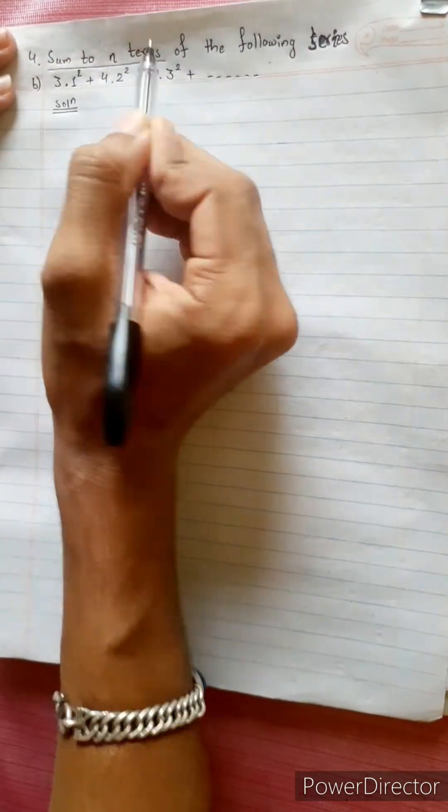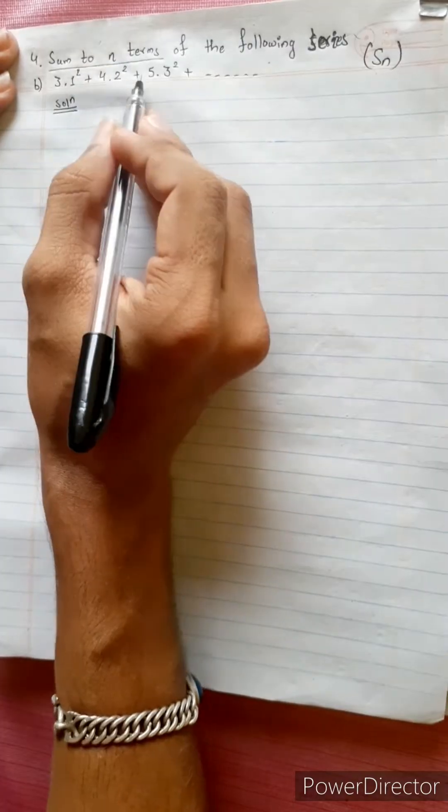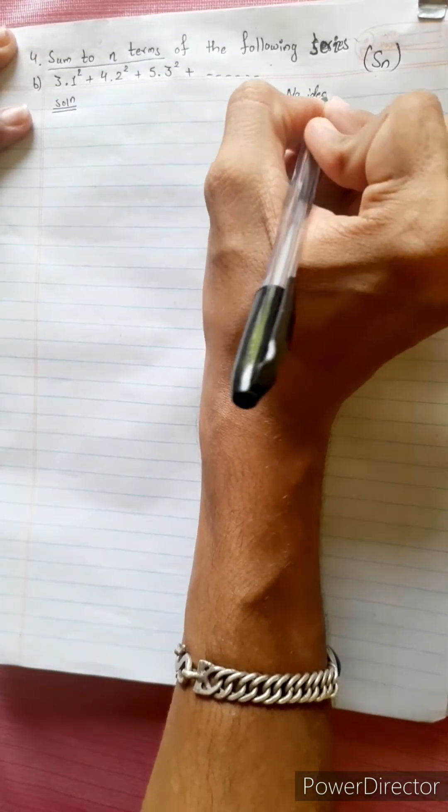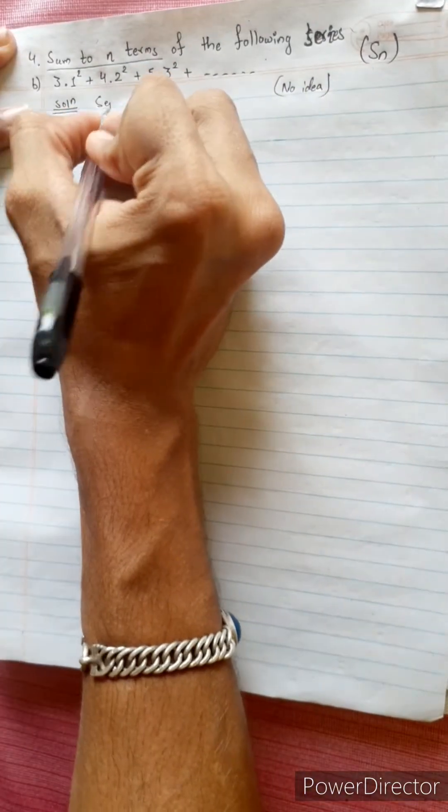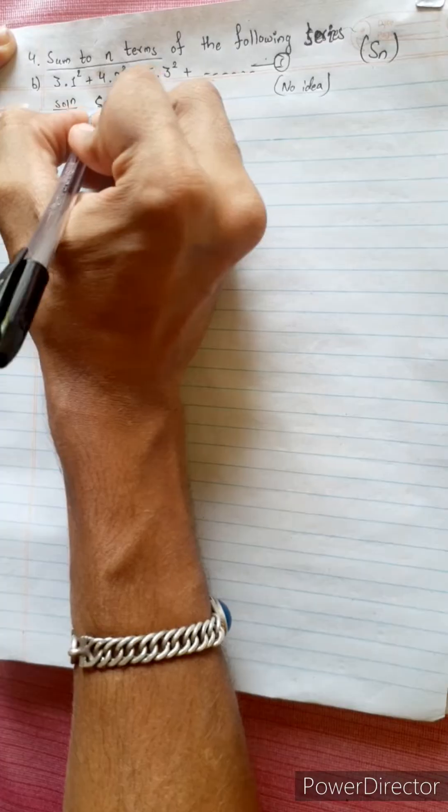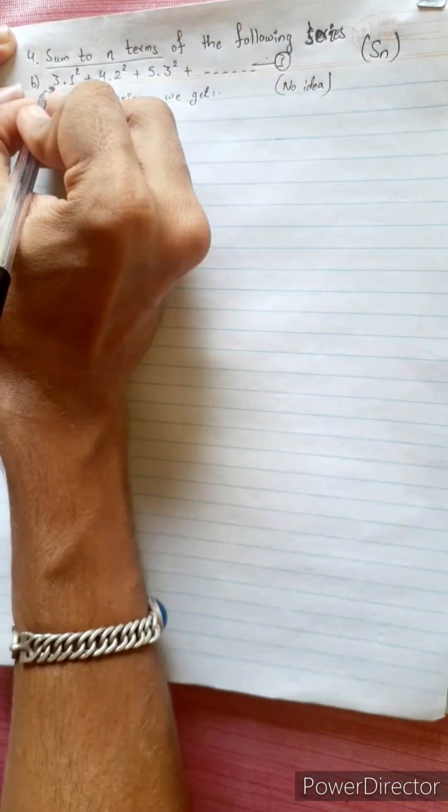We will find sum to n terms. Sn has been created. We will see this series. We will see a separate version. Separating, I will say one.